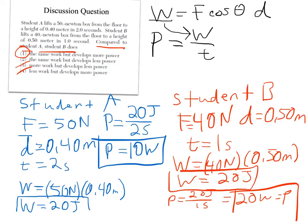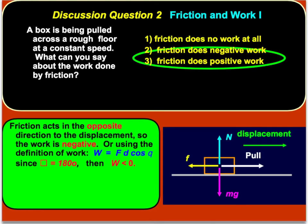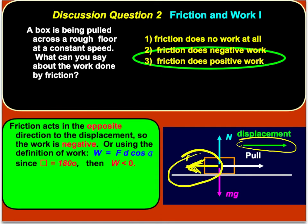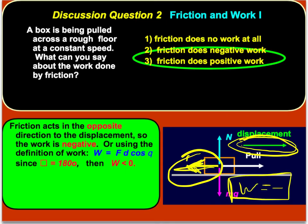Here's a discussion question we did in class: friction and work. A box is being pulled across a rough floor at a constant speed. What can you say about the work done by friction? Looking at the diagram, the displacement is to the right, meaning friction points to the left because friction opposes motion. Since friction is the force we're worried about and the displacement is to the right, that's in opposite directions — making the work done by friction negative. So friction does negative work.